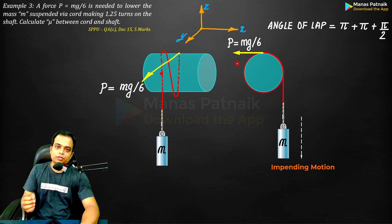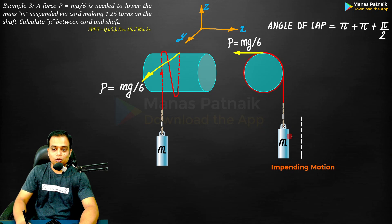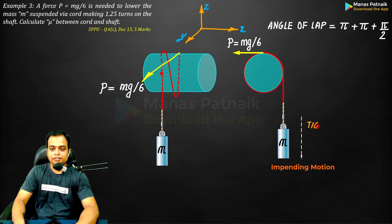Having made this we can go ahead and apply the ratio of tension formula. You already know the impending motion is in this direction, so this has got to be the tighter side. What am I saying? Tighter side.